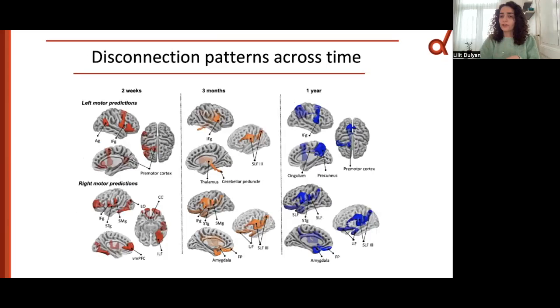We went further and looked at the top three components in the ridge regression that were significant contributors in explaining the variance in data. For example, the right inferior frontal gyrus was a significant contributor for the left motor impairments starting from two weeks to one year after stroke.